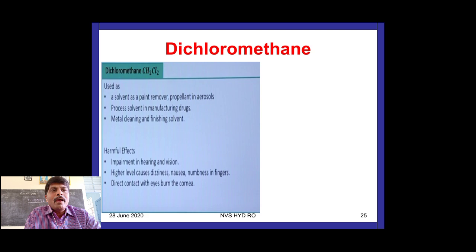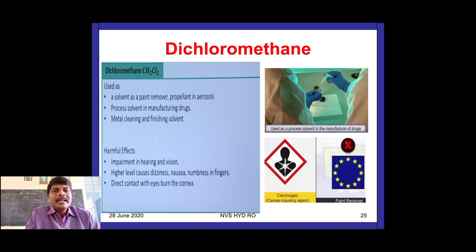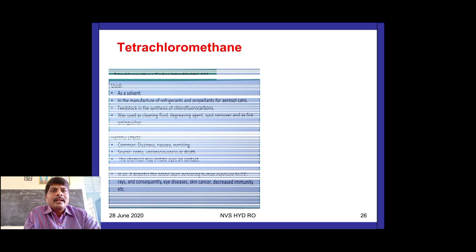First: dichloromethane (CH2Cl2). Its uses include: solvent, paint remover, propellant in aerosols, and metal cleaning/finishing solvent. Harmful effects: impairment of hearing and vision; at higher levels it causes dizziness, nausea, numbness, and tingling. Direct contact with eyes burns the cornea.